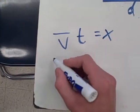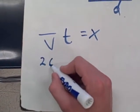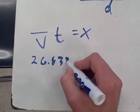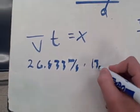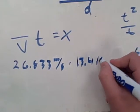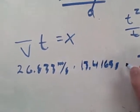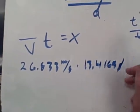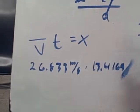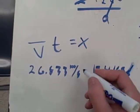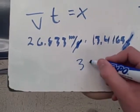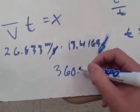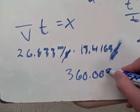And then it will be 26.833 meters per second times 13.4165 seconds. The units cancel out and then you are left with 360.005 meters.